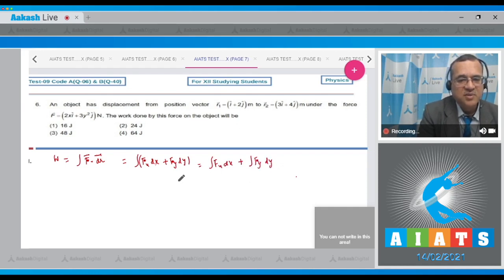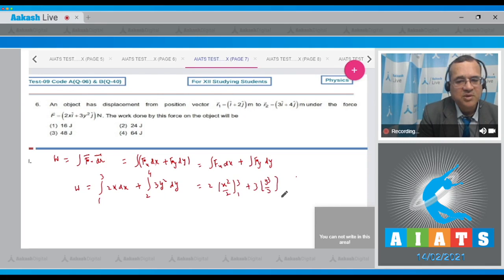Now to search the limits and fx from this question: fx is 2x into dx and the limit of x are from 1 to 3, and fy equals 3y² into dy with limits of y from 2 to 4. So this becomes 2 times x² by 2 from 1 to 3 plus 3 times y³ by 3 with limits from 2 to 4.